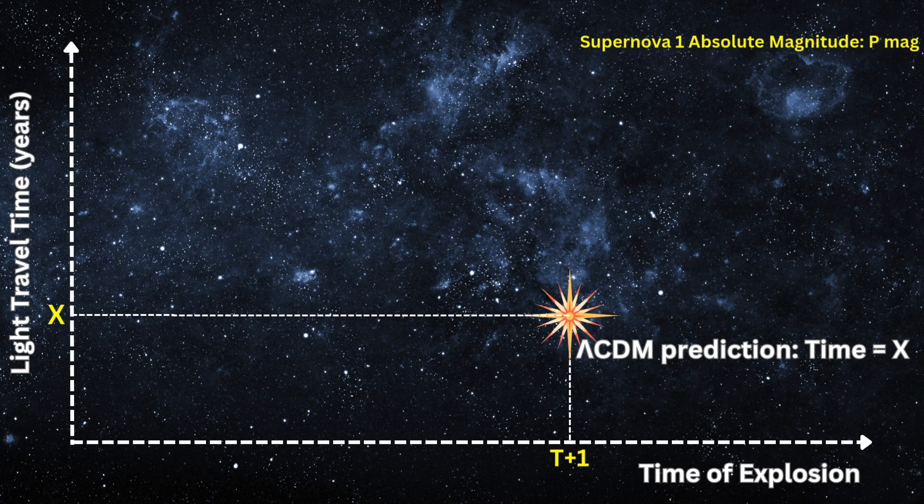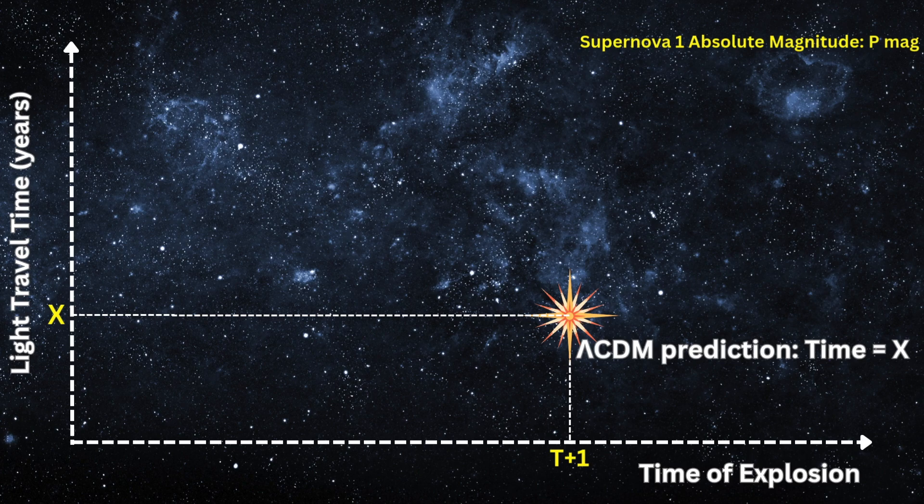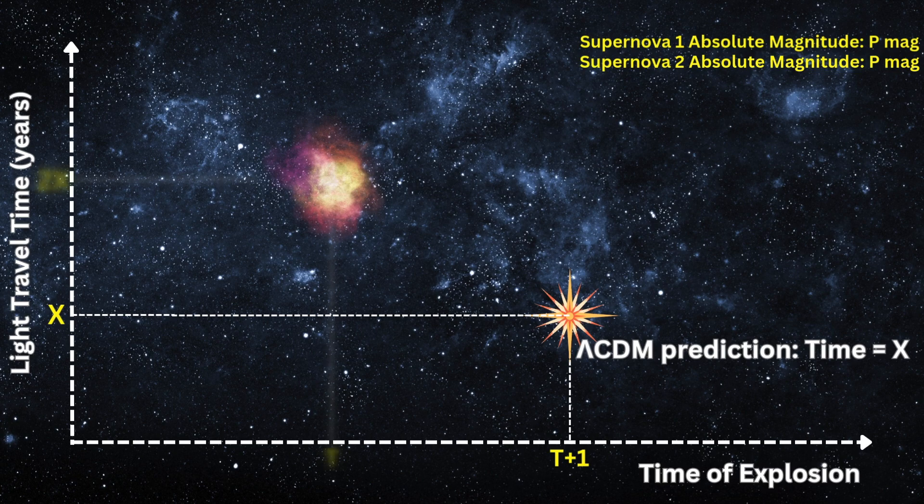If both the observation and the theoretical model agree that the travel time is x, we accept that the expansion behavior matches expectations. But here's the key. This travel time x doesn't just reflect the distance the light traveled. It also reflects how much the universe expanded during that time. So the light didn't move across a fixed distance. It traveled a path that stretched over time as the universe expanded.